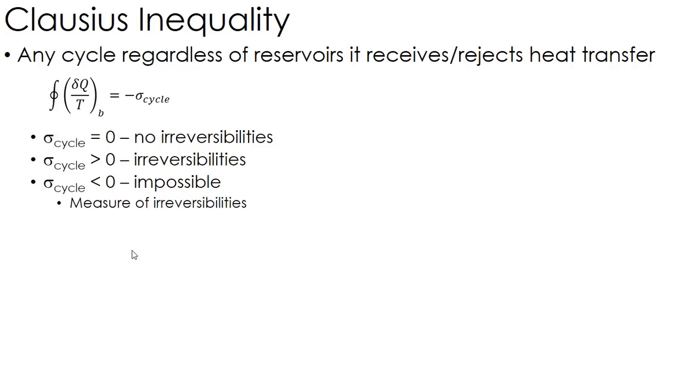Now, the sigma is actually a measure of the irreversibilities. And this is really what we're going to get started with when we start talking about entropy in the next chapter. So this is kind of the foundation for our development of entropy. And the sigma is really the measure of what we call the entropy production, which we'll talk about later. But it's a measure of how irreversible it actually is.